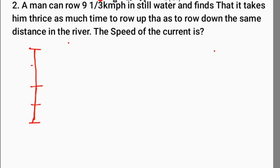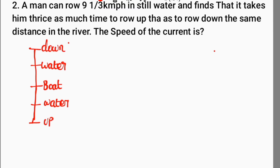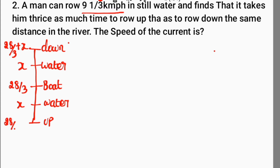Here is the diagram. The center represents boat speed. Boat speed is 9⅓, which equals 28 by 3 km per hour. Let x be the water speed. Downstream speed is boat plus water: 28/3 plus x. Upstream speed is boat minus water: 28/3 minus x.